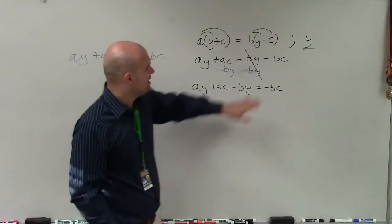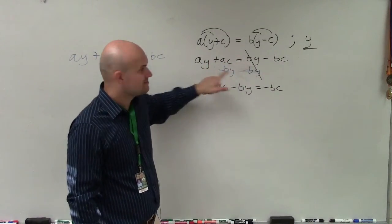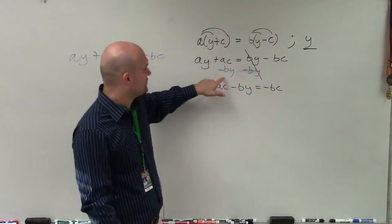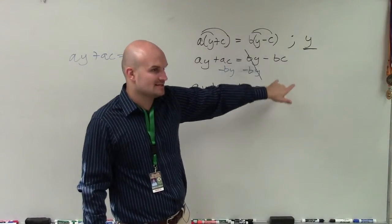But the thing is, if you add the bc over there, you still have a variable on both sides. So adding bc didn't really help you out, right? Unless you add bc over here and then subtract the ay, then you'd have both the y's on the same side.